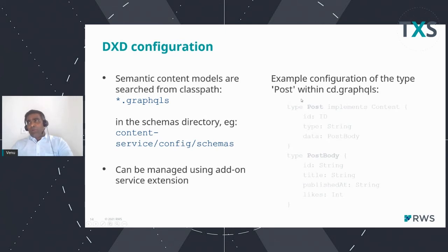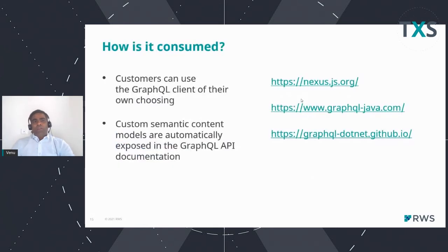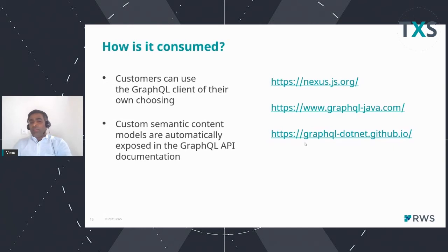You can also use an add-on service to create all your GraphQL schemas and deploy them as an add-on extension. You can consume them using any JavaScript framework or anywhere you want to consume the content directly. All your custom content models are also exposed through the GraphQL API documentation — which is very useful. So if you want to know what you can achieve with a specific custom model you created, you can find that in the documentation as well.